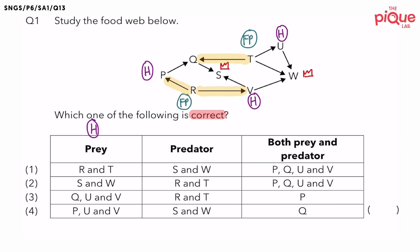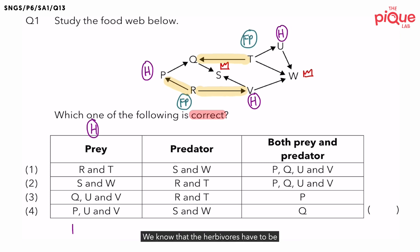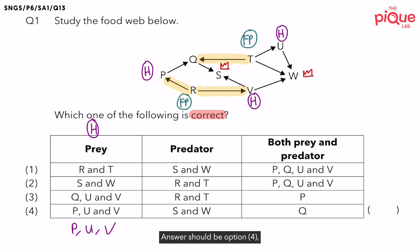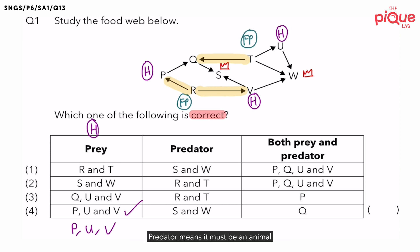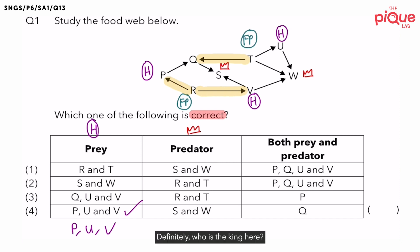So we are done labeling the herbivores: P, U, and V. With that, we already have our answer — it should be option 4. But let's check the rest just to be safe. For the predator-only option, a predator is an animal that feeds on other animals and does not get eaten by other animals. We already labeled this — we call this the king. The kings are S and W, so the predator-only answer would be option 1 or 4.